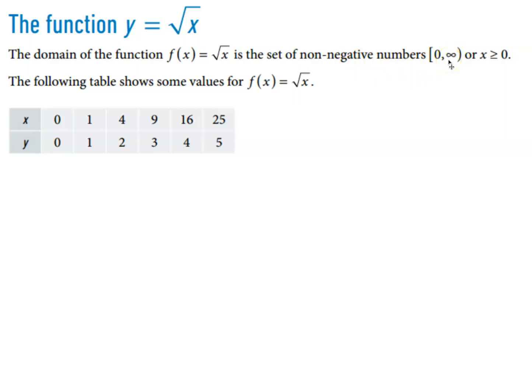So therefore, the domain of the function is zero up to positive infinity, or you could also write it as x is greater than or equal to zero. And there's an example of some values for that particular table. So for example, when x is 25, square root of 25 is 5.